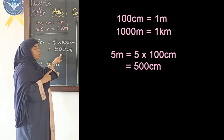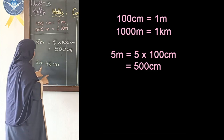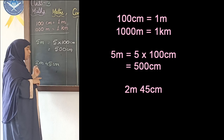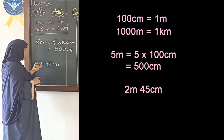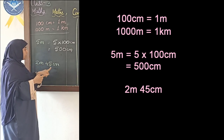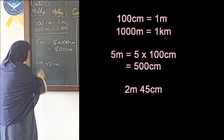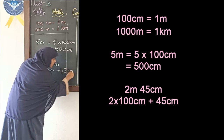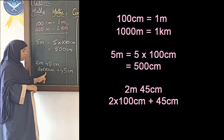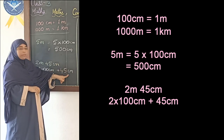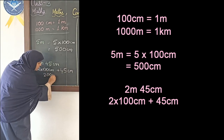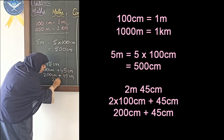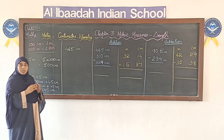If you have a mixed unit like 2 meters and 45 centimeters, and you need to convert it all to centimeters, you convert the meters part: 2 × 100 = 200 centimeters, then add the remaining 45 centimeters. So 200 + 45 = 245 centimeters. This is how we convert meters to centimeters.